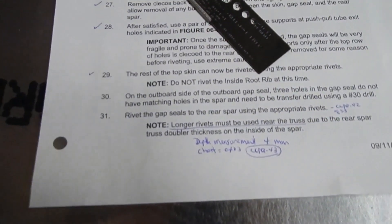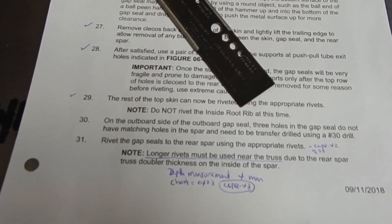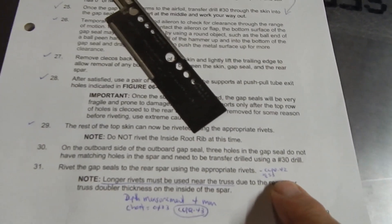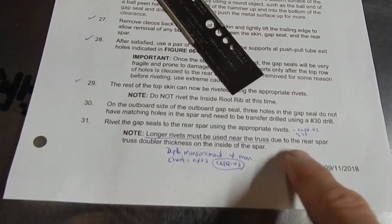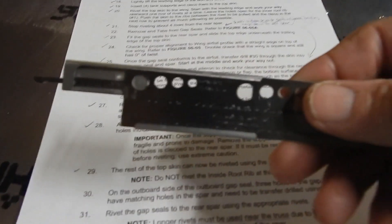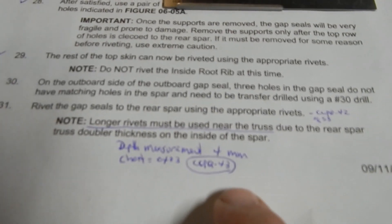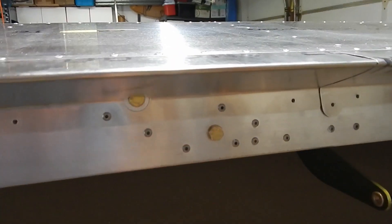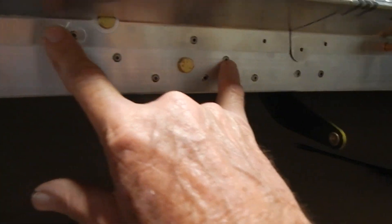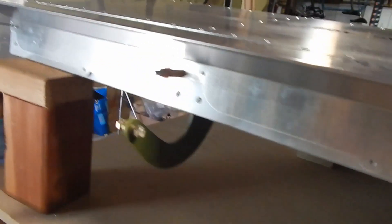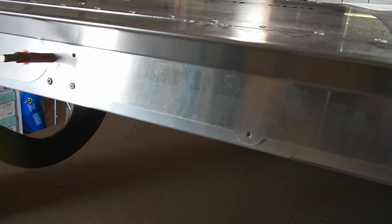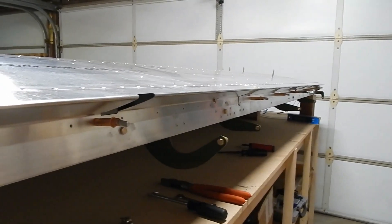The other little gotcha is the instructions, number 31. They said rivet the gap seal using appropriate rivets, which are the stainless steel 42s, but then it says longer rivets must be used near the truss due to the rear spar, but they don't tell you the rivets to use. So I used my handy rivet measurement tool, and I measured the depth to be four millimeter, which is the 43s, the stainless steel 43s. So another little gotcha. Those are up here where the truss doubler is, where we've got those bolts. There's two rivets that have to use the 43s. Then you've got to drill out a couple holes here that aren't drilled. You got to match drill to 30s, get those cleaned up before you rivet. Other than that, we're going to finish riveting the gap seal and then we're done with the top skin of the wing.